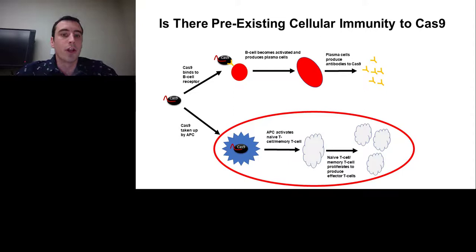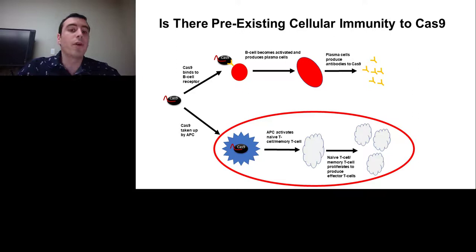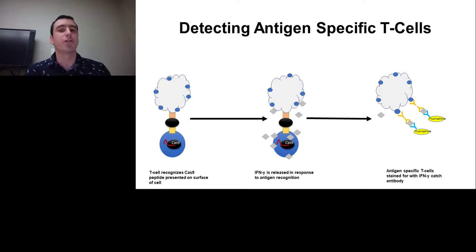We have clearly shown we can detect antibodies against Cas9. But as discussed earlier, antibodies against Cas9 aren't necessarily an impediment to therapeutic genome editing. What is of much more concern is whether there are antigen-specific T cells in the population against Cas9. The first assay we used to detect antigen-specific T cells was a cytokine capture assay.